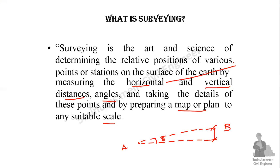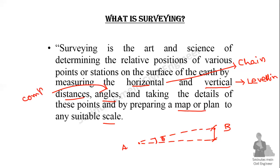The horizontal distance is measured using a chain. The vertical distance is determined by leveling. The angle is measured using a compass.